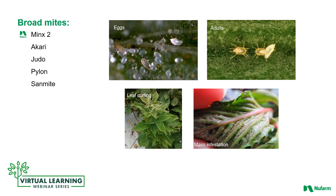Moving over to broad or cyclamen mites, which is a different mite type, it affects many crops including begonias, cyclamen, and gerbera daisies. Like other mite families, they reside on the underside of leaves and have three phases of life: egg, instar, and adult. You can see the eggs, adults, and instars in the two photographs. There is also the typical leaf curling appearance where they feed on the underside between the veins. Acari, Judo, Pylon, and Sanmite are the recommended miticides, plus Minx-2, which impacts populations and is a good rotational material with the other products.